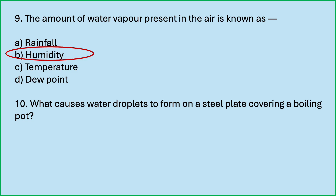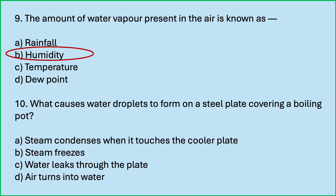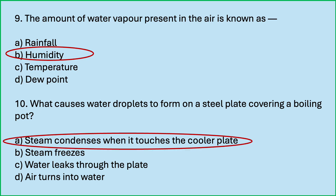What causes water droplets to form on a steel plate covering a boiling pot? Options are: steam condenses when it touches the cooler plate; steam freezes; water leaks through the plate; air turns into water. Which is the correct answer? Steam condenses when it touches the cooler plate. When you cover a boiling pot with a steel plate, you can see water droplets on the steel plate. This is due to condensation.